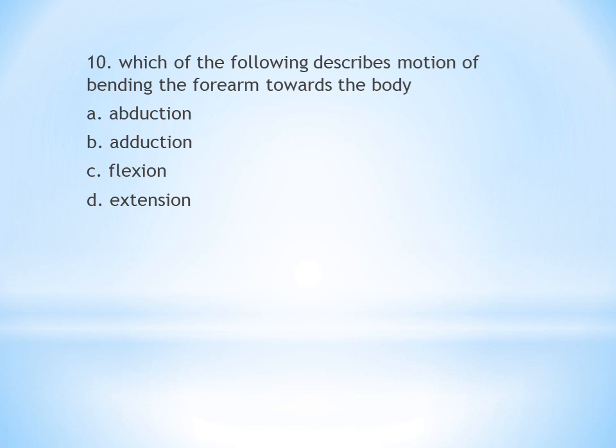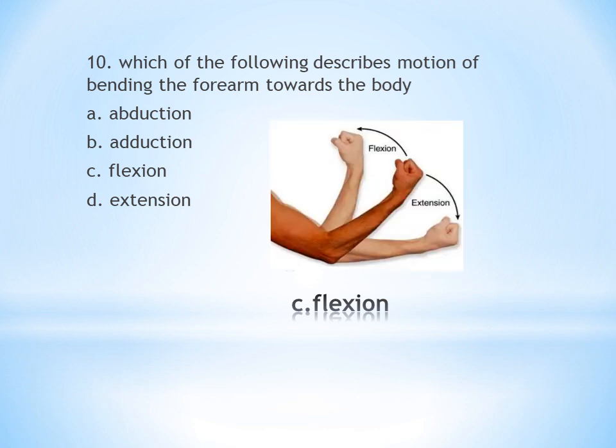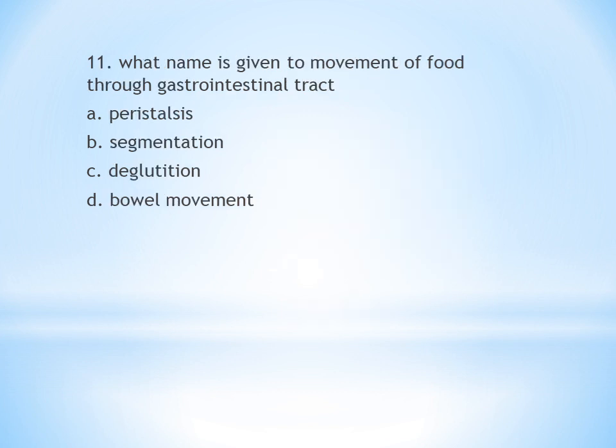Question 10 concerns bending of the forearm towards the body. The answer is flexion. If the forearm moves toward the body, that is flexion. If the forearm moves away from the body, that is extension.